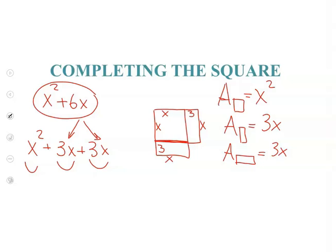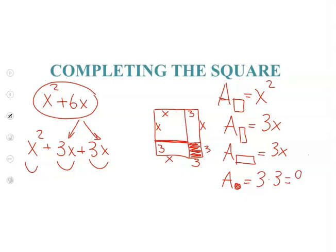Now let's look at this picture. What is missing for us to complete this large square? Do you see that just this little square is missing? What are the sides of this little square? So there would be 3 by 3. So the size of this little square will be 3 by 3. That means the area of this little square will be 3 times 3, which equals 9. So this is 3 squared.